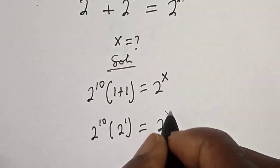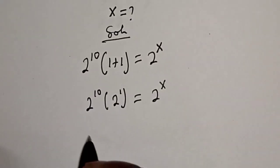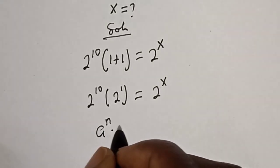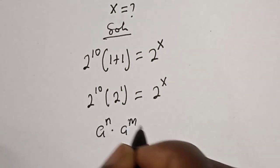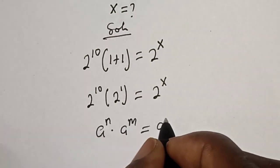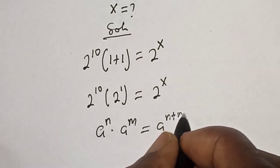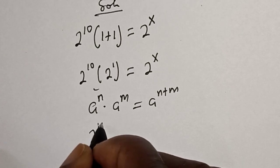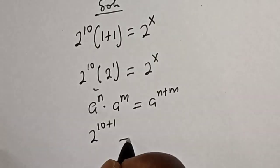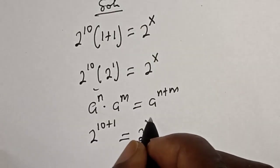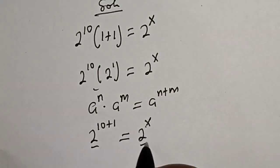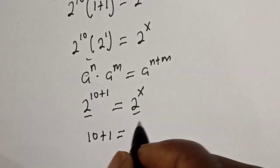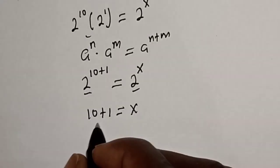Take note of this rule: if you have a raised to power n multiplied by a raised to power m, this is equal to a raised to power n plus m. Then this left hand side becomes 2 raised to power 10 plus 1, is equal to 2 raised to power x. We have the same base, so 10 plus 1 is equal to x.